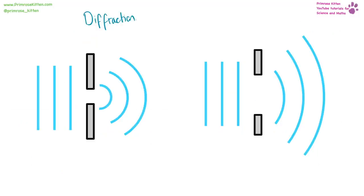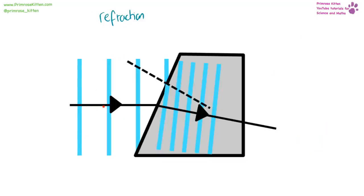Diffraction happens when a wave passes through a gap — the wave curves around as it comes out. The amount of diffraction depends on the size of the gap. Refraction happens when a wave passes from one medium into another, such as air into glass or water, and changes direction. This happens because different parts of the wave change speed at different times when crossing the boundary.